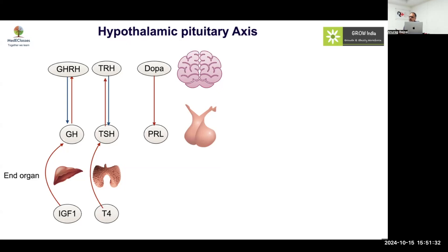Why is there a different evolutionary selection for prolactin compared to other hormones? Prolactin's default mode is switched off; for all others the default mode is switched on. It's like a luxury — it's only needed by lactating women. If you have no prolactin receptor you will have no problem in your life except for lactation. So it's like an AC switch which should default to off; the others are life-saving so they must default to on.